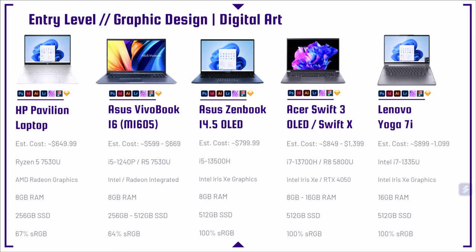Next up on the list, we have the Acer Swift 3 OLED or the Acer Swift X — two great laptops. They come with slightly different processors, so do a little bit of digging when making your purchasing decision. The reason I have these linked together is they're very similar chassis and share similar price points. This year's model with the i7-13700H and RTX 4050 went up about $200 in price, so you could snag last year's model and still get a great laptop at a great price. I would definitely go for the 16GB of RAM, the 512GB SSD, and, of course, the 100% sRGB for the OLED model.